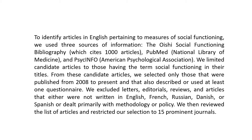If you read this article carefully, you can see the researcher has written: to identify articles in English pertaining to measures of social functioning, they used three sources of information. They limited candidate articles to those having the term 'social functioning' in their titles, selected only those published from 2008 to present, and that described or used at least one questionnaire. They excluded letters, reviews, and editorials not written in English, French, Russian, Danish, or Spanish, or that dealt primarily with methodology or policy. They then restricted selection to 15 prominent journals.